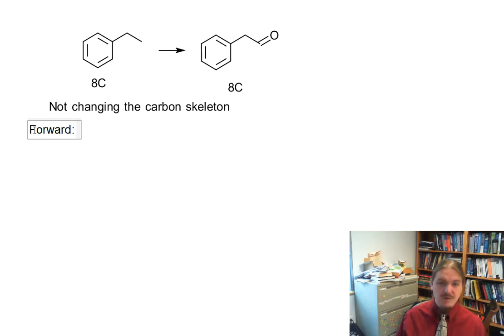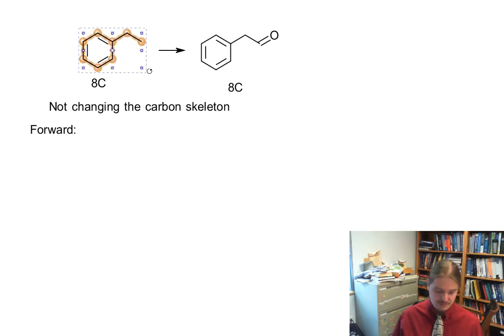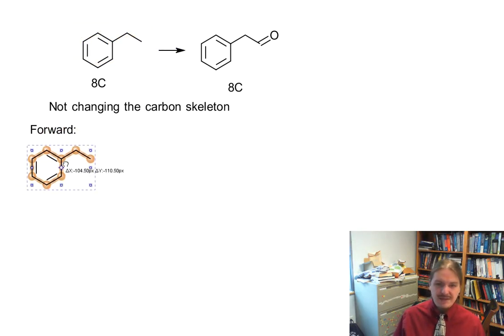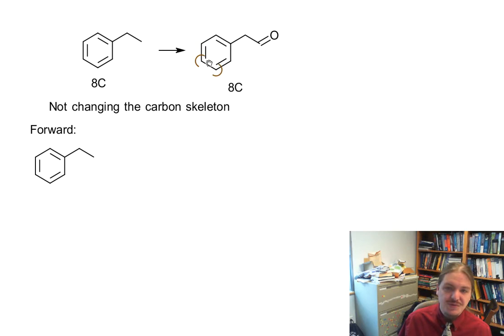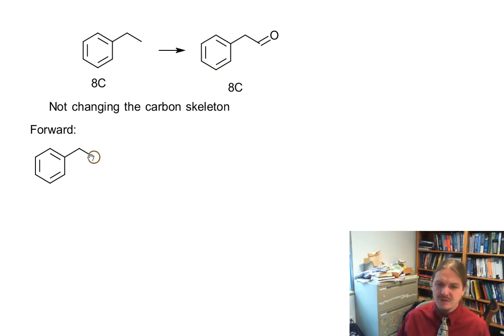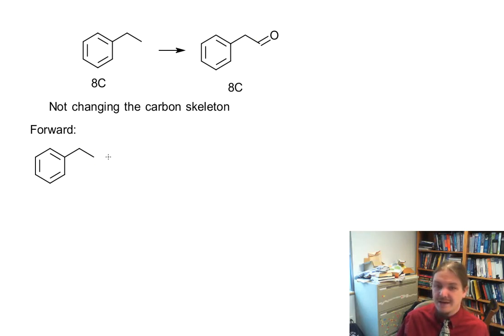In our forward direction, we need to think about what can ethylbenzene do? Ethylbenzene is a molecule that has an aromatic ring. Aromatic rings have a lot of characteristic reactions, but if you look at the structure of the product, that part of the molecule hasn't changed. So the only part of the molecule we're changing is this ethyl group, and we're adding a functional group out here at the end.